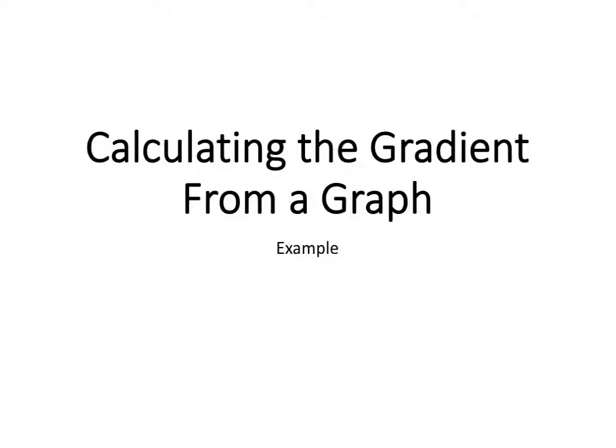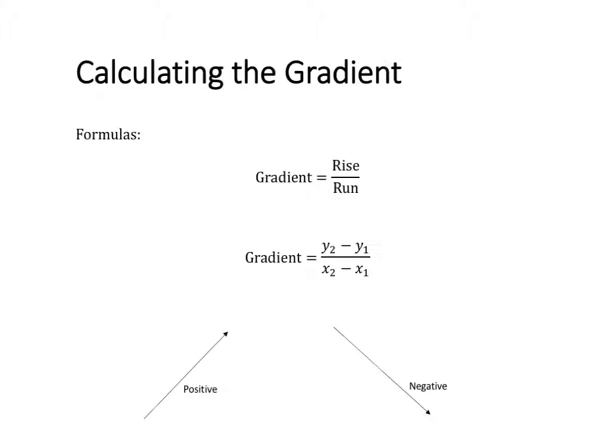In this video, we're going to have a look at how to calculate the gradient of a straight line from a graph. To calculate the gradient, we can either use the formula gradient equals rise over run, or gradient equals y2 minus y1 over x2 minus x1.